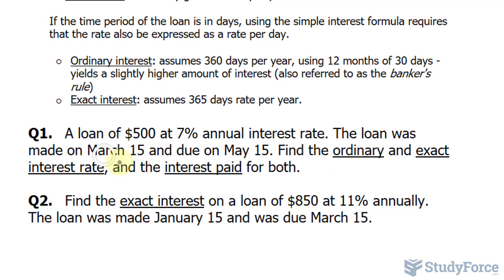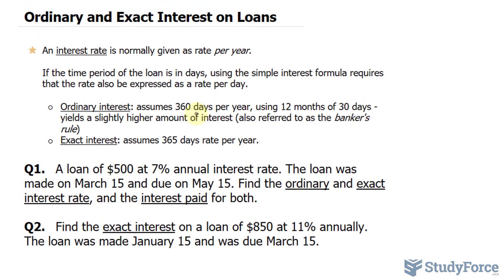Beginning with the ordinary interest, notice that this is March 15 and May 15 — that's a difference of two months. Using the ordinary interest assumption of 360 days per year, that makes 60 days. So we'll calculate 60 divided by 360 total days in a year.